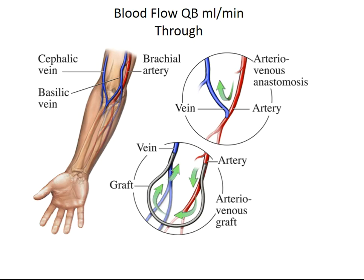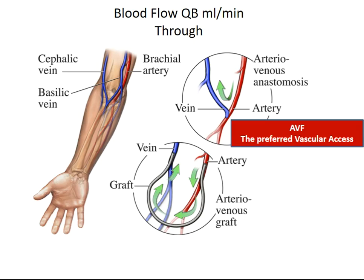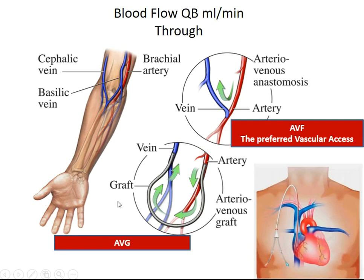Blood flow is achieved through one of three vascular access types. First and preferred is the arteriovenous fistula. Second is the arteriovenous graft. Lastly, the central venous catheter, which is the last choice.